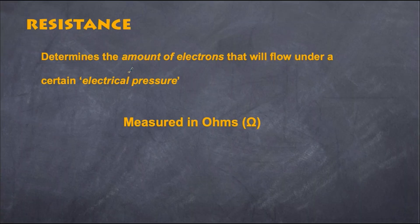In essence, it determines the amount of electrons that will flow under a certain electrical pressure. The amount of electron flow—that's talking about the current—for a certain electrical pressure, which is talking about voltage. Ultimately it's measured in a term called ohms.